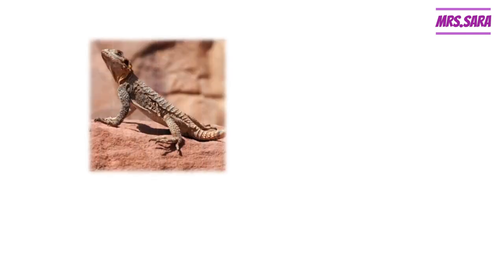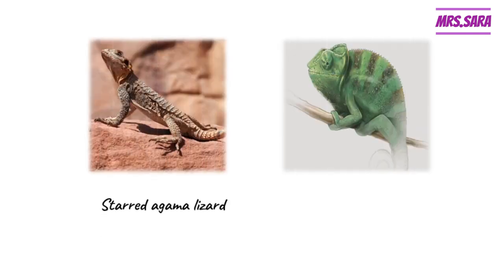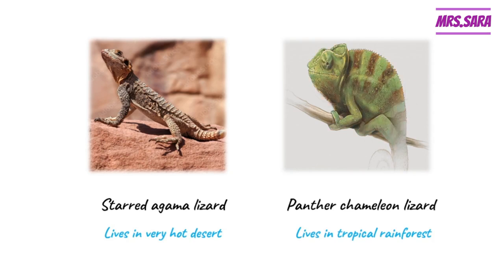This is the agama lizard, primary four, and this is the panther chameleon lizard. The agama lizard lives in a very hot desert, and the panther chameleon lizard lives in a tropical rainforest.